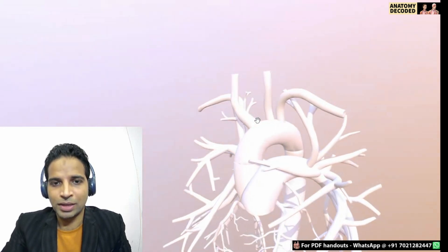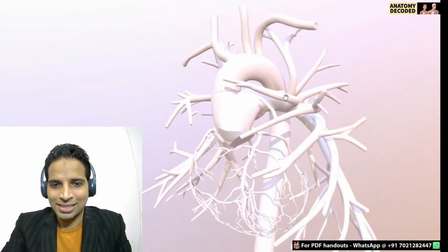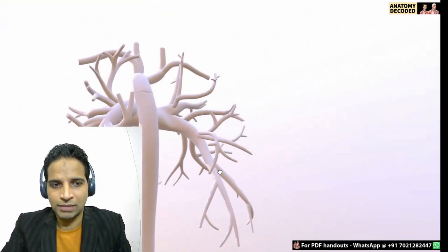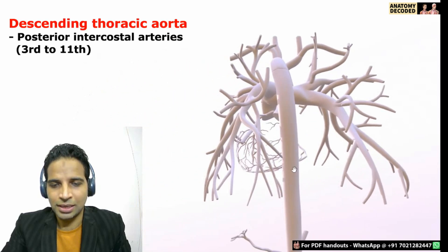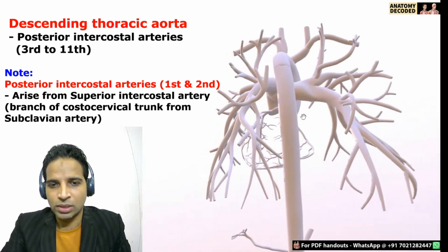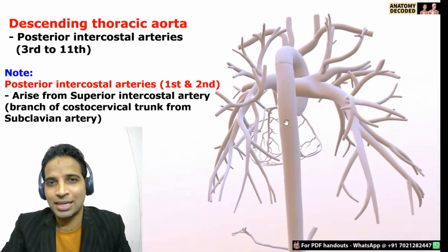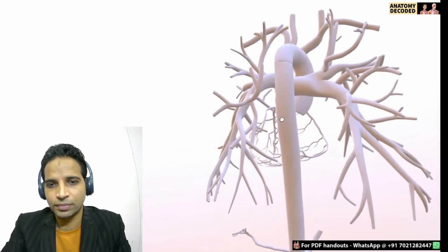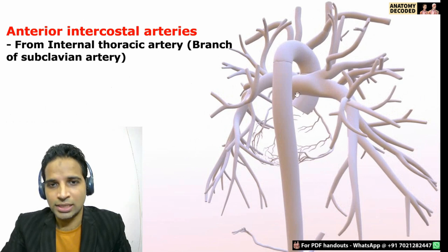Having discussed the brachiocephalic trunk, the common carotid artery, and the subclavian artery, we continue: the arch of aorta continues as the descending thoracic aorta. Viewed from the posterior aspect, the descending thoracic aorta gives multiple branches in the thorax in the form of posterior intercostal arteries. On the anterior aspect, there is also the anterior intercostal artery arising from the internal thoracic artery.